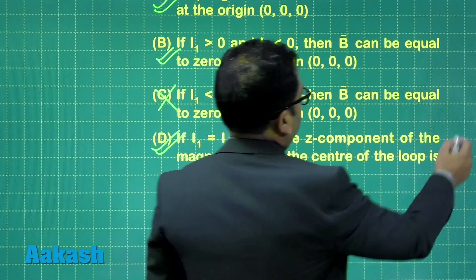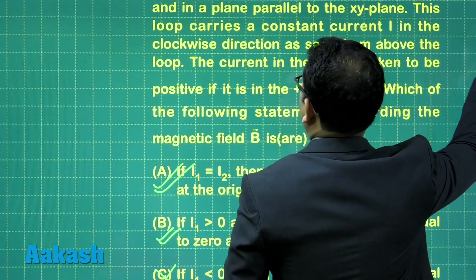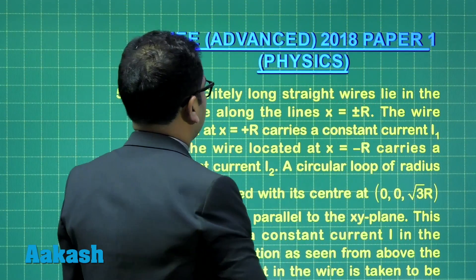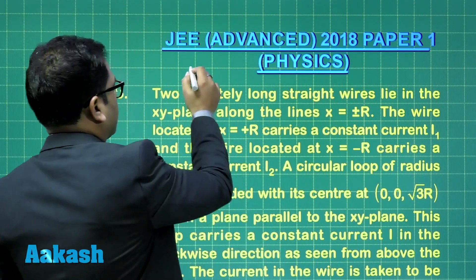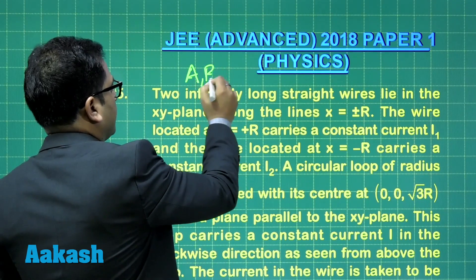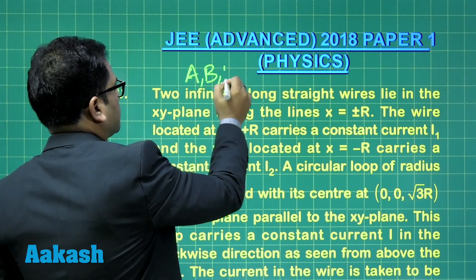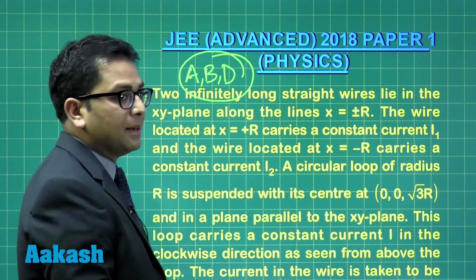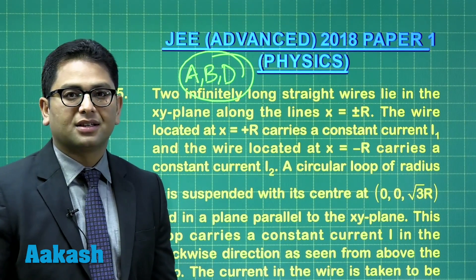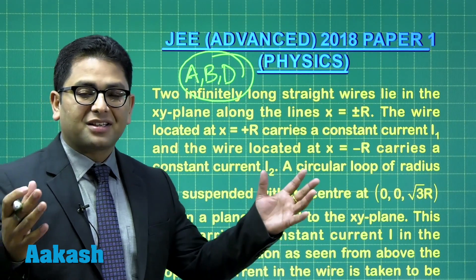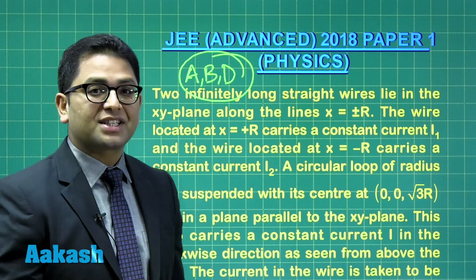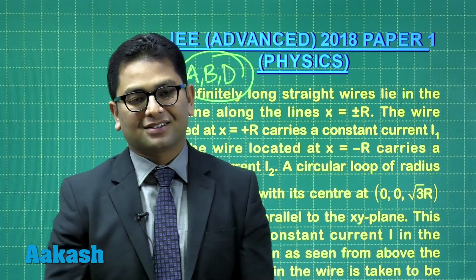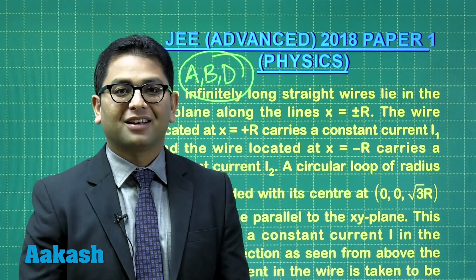For this particular question — question number five of section A — options A, B, and D are the correct ones. Let's move to question number six, which is the last question of the first section.